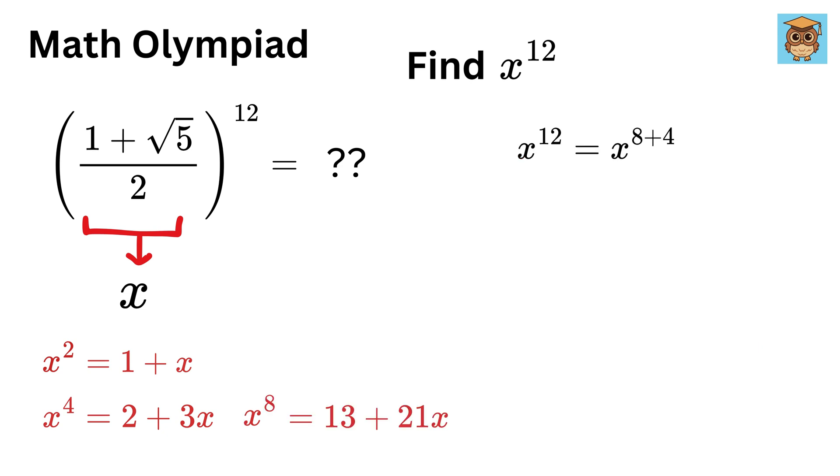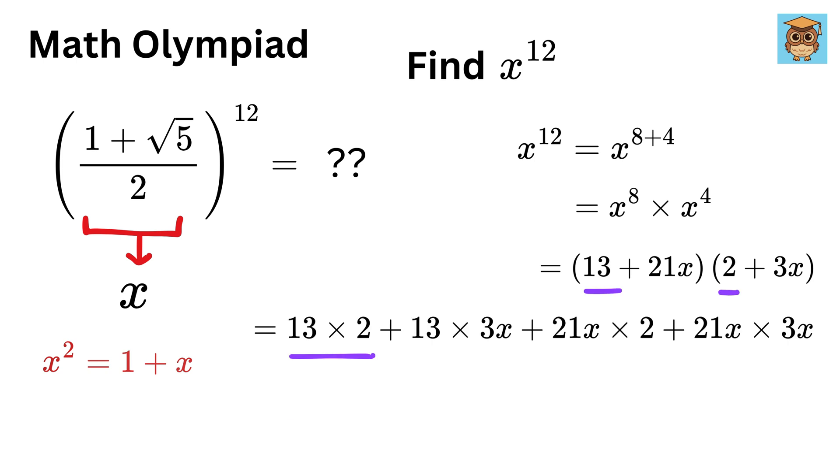Now x¹² can be written as x^(8+4). Using the exponents rule, this will be x⁸ times x⁴. Substitute the values we just obtained. It will be (13+21x)(2+3x). This gives 13(2) + 13(3x) + 21x(2) + 3x(21x), which will